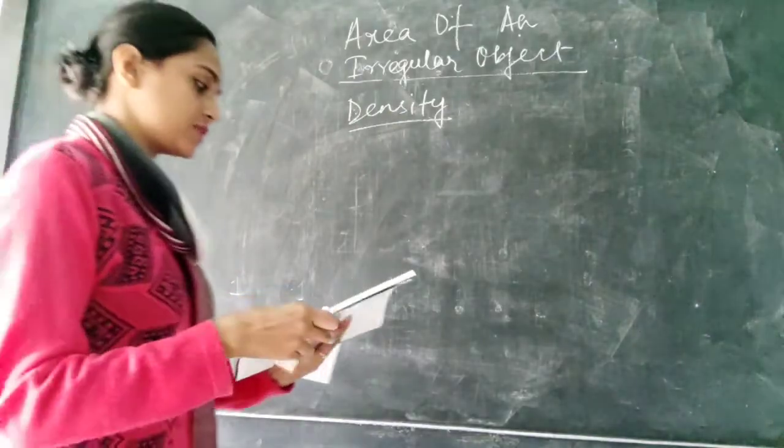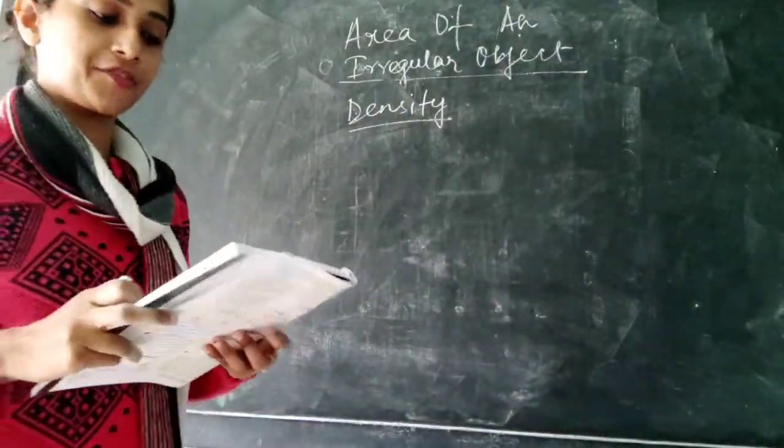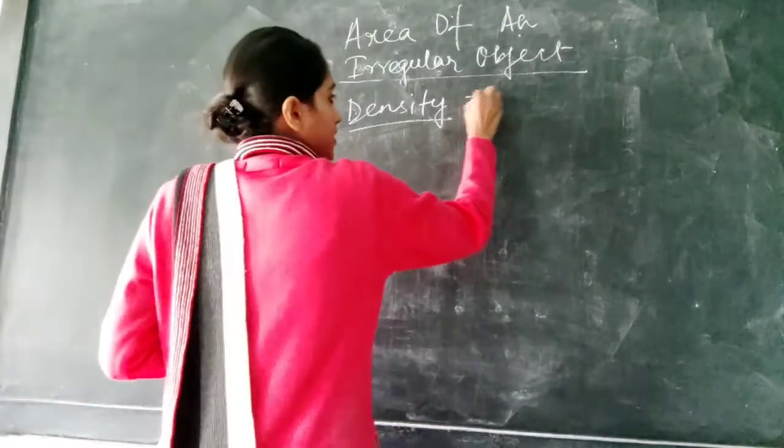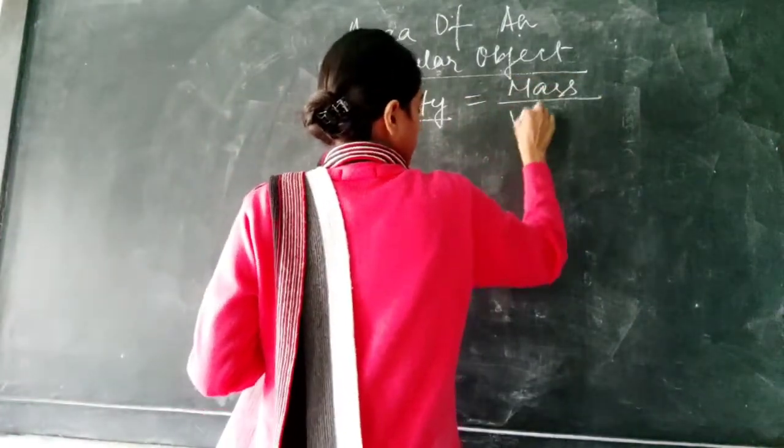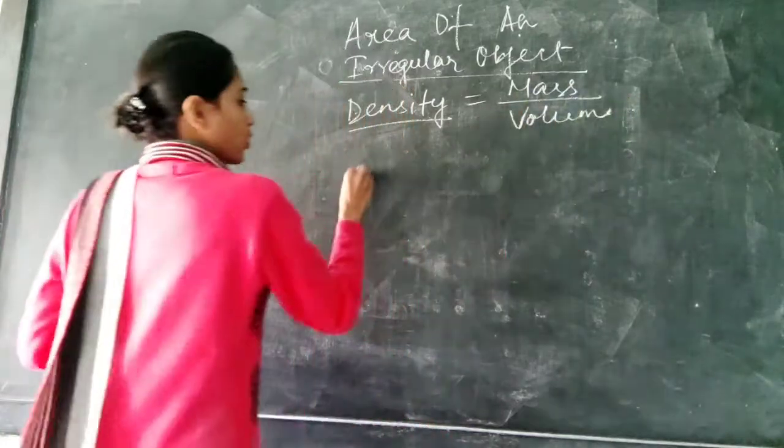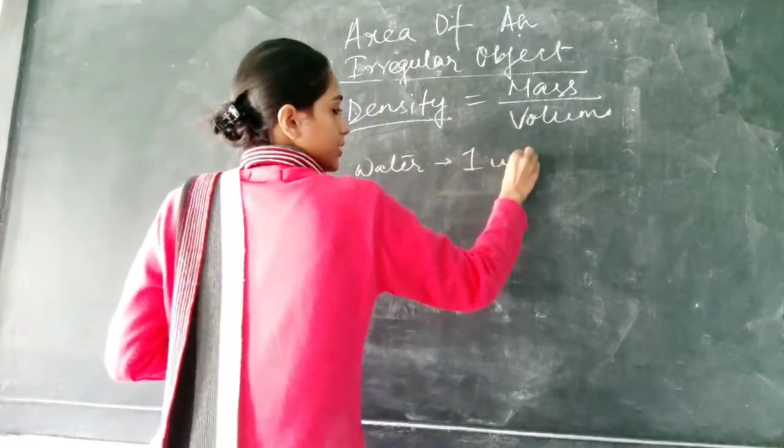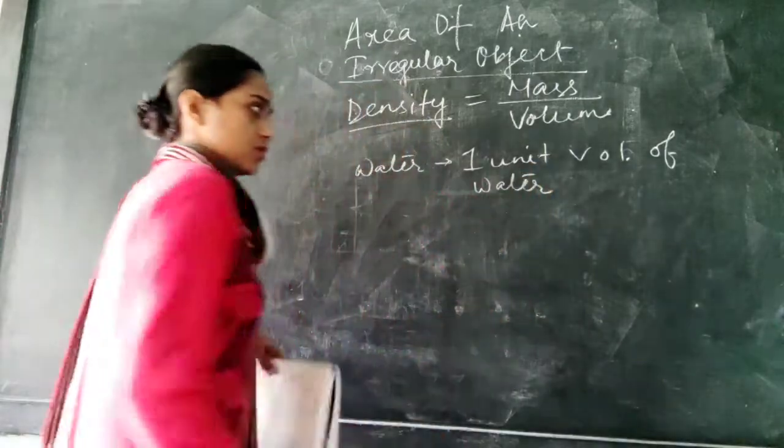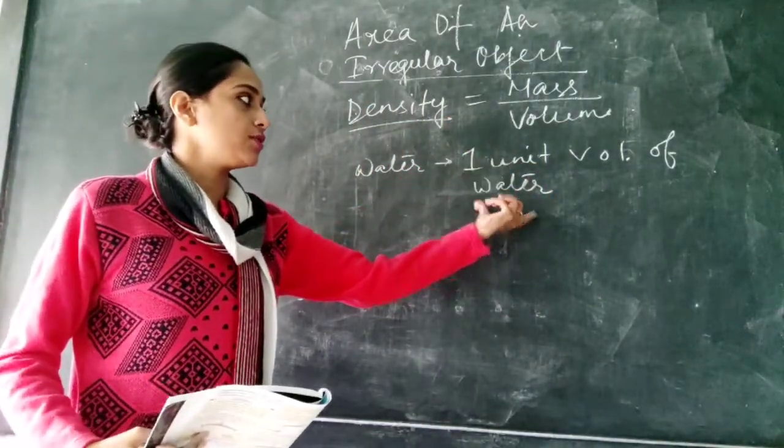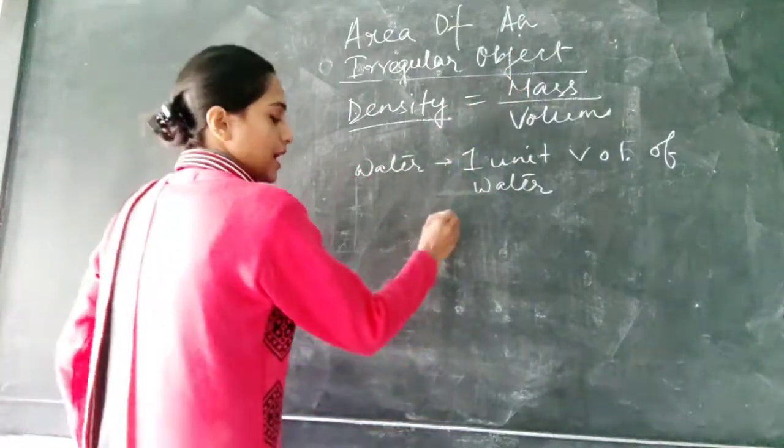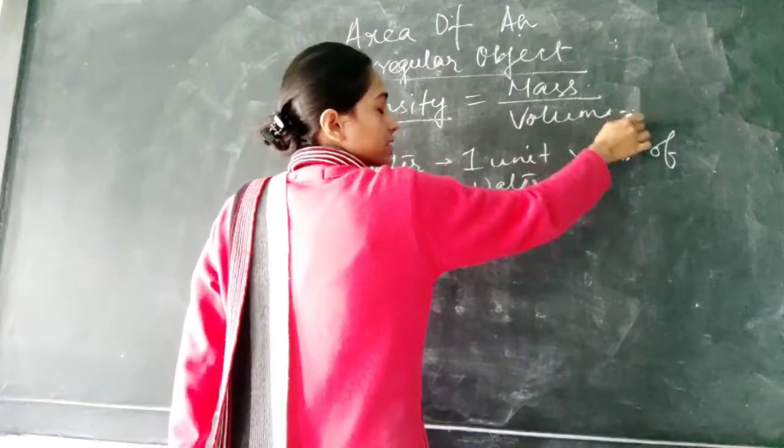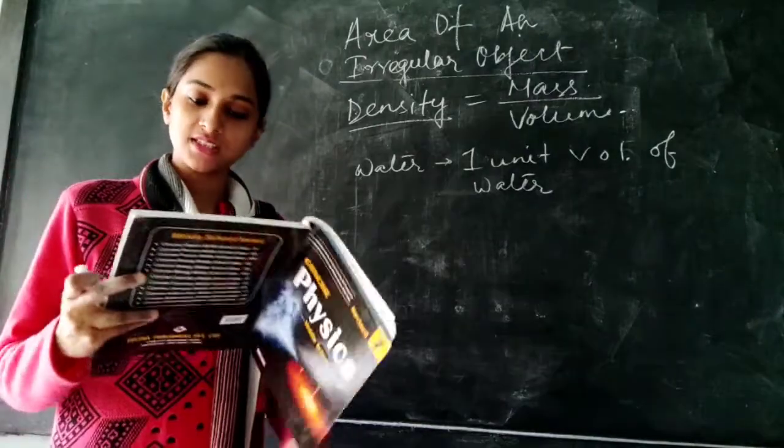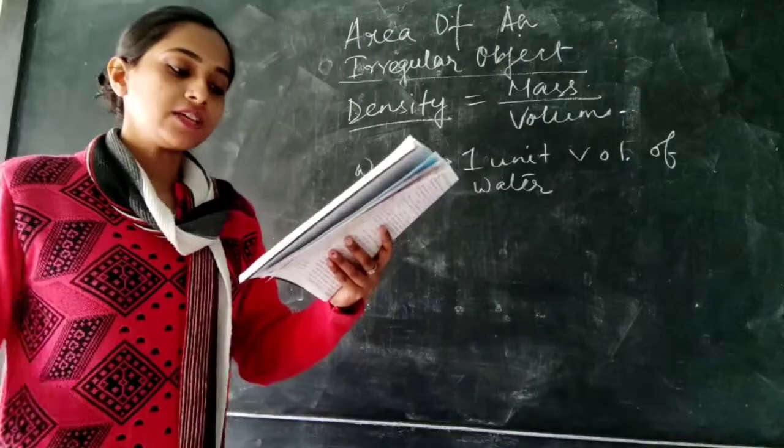So what is the definition of this density? At first we will go to the definition that density of a substance is defined as the mass of a unit volume of that substance. So density formula is mass by volume. Suppose water, so 1 unit volume of water we will take, we will take the mass of 1 unit of water and then we will put those 2 values into this formula and we will get the density of the water. So this is the definition of density.